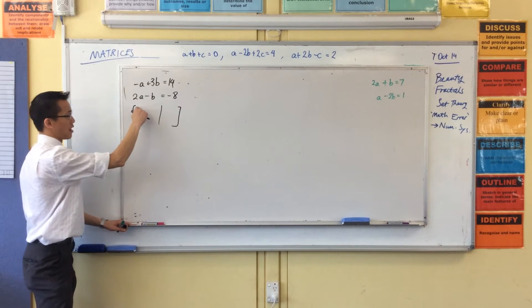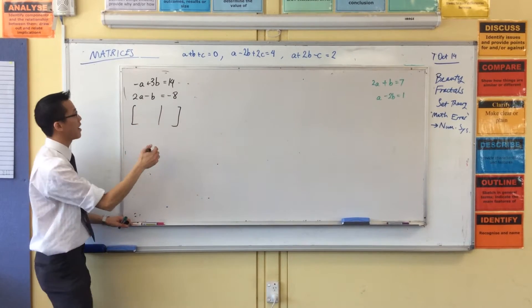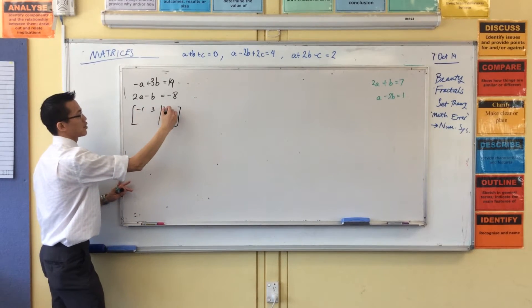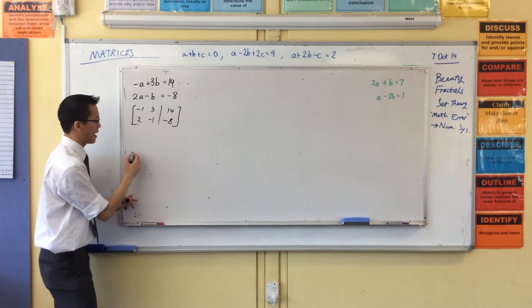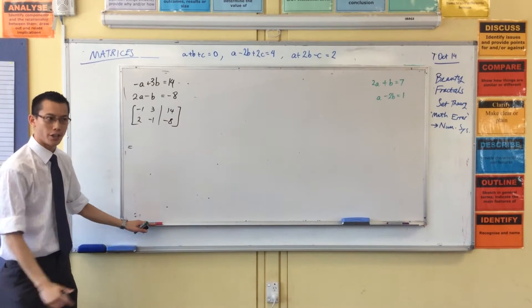So it's going to be two rows, three columns. And I write down my numbers, like so. Two, one. Okay, so far, so good.